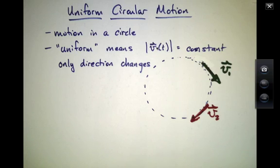Uniform circular motion is another type of motion in two dimensions in which there is an acceleration. What we mean by circular motion, of course, is that an object is moving in a perfect circle.